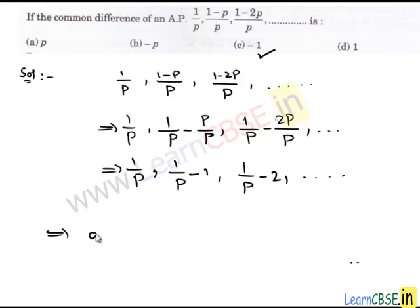Let us move to the next method. Here we know that common difference is the difference between a term and its preceding term. We take the second term. Then the common difference is T2 minus T1. T2 is 1 upon P minus 1 and T1 is 1 upon P.